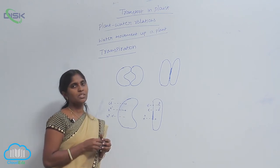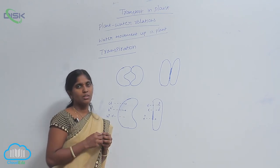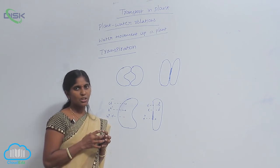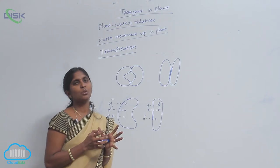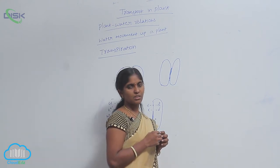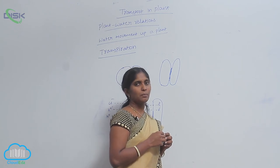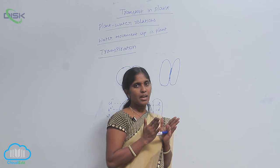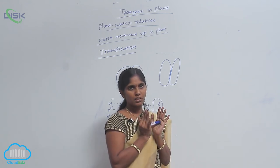When the guard cells are rich with water, then they become turgid. In the turgid shape, the stomata pore is opened. In the loss of water conditions, the stomata becomes flaccid. It means the guard cells become flaccid and the stomata pore remains closed.